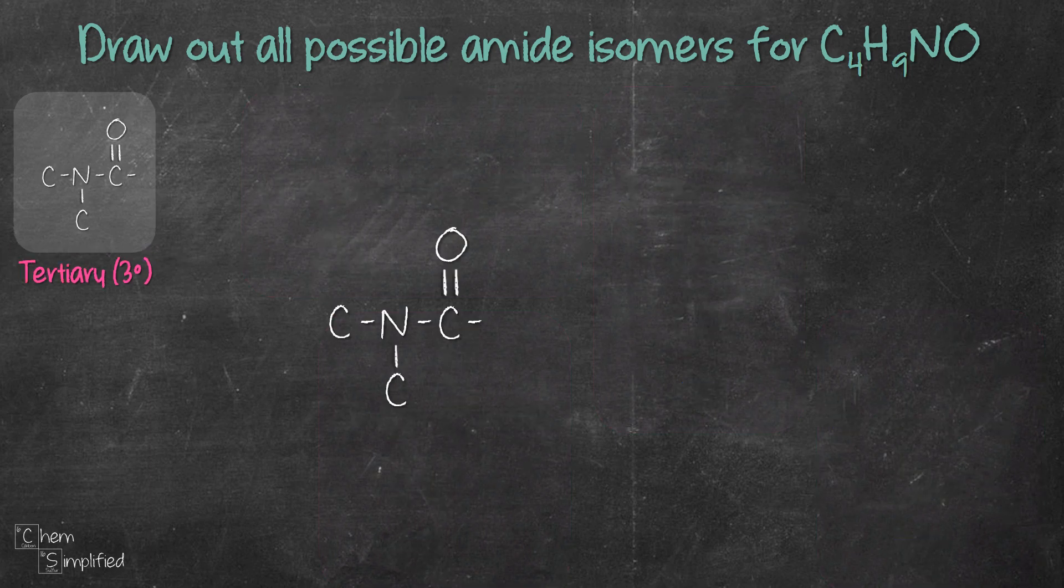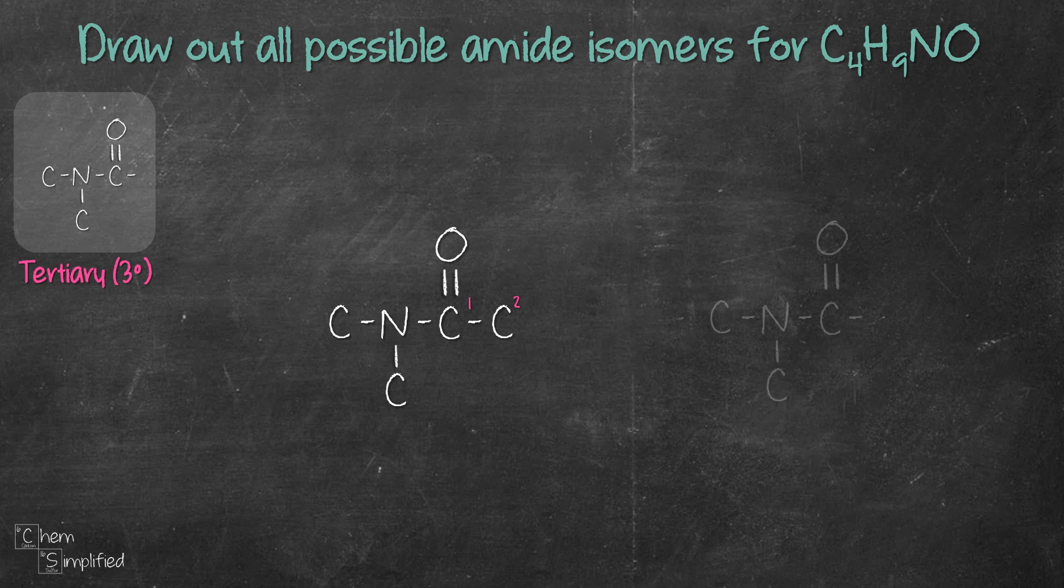Moving on to the tertiary amides. We've already used up three carbons, that means we only have one carbon left. So we'll just connect it next to the carbonyl group like this. This will give us a two carbon chain tertiary amide. We can shorten the chain to one carbon chain like this, and then we place the remaining carbon here. This will give us a one carbon chain tertiary amide.